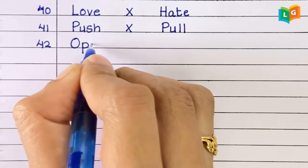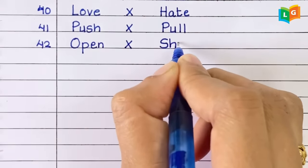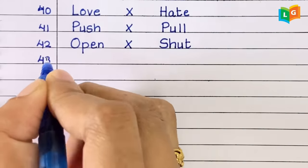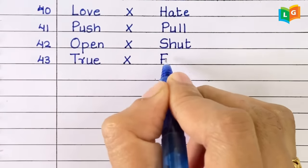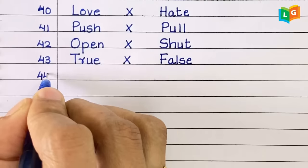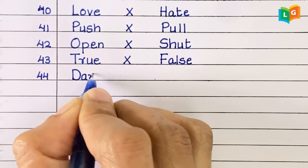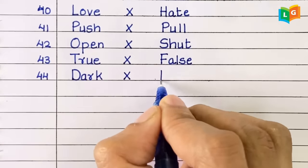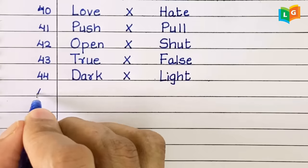Forty-two, open, shirt. Forty-three, true, false. Forty-four, dark, light.